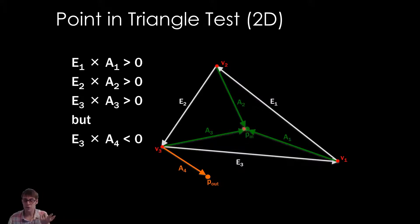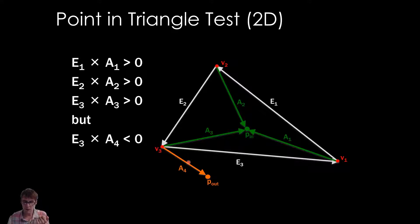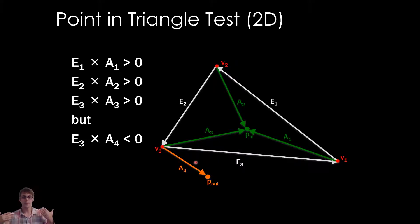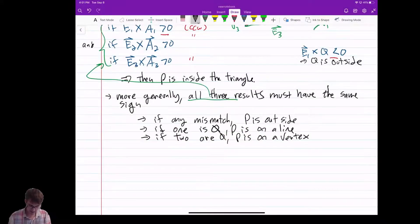Here's a slide showing the same demonstration: E1 counterclockwise to A1, E2 counterclockwise to A2, E3 counterclockwise to A3 — so P is inside. For P outside: the vector from V2 to P out would be counterclockwise, but E3 is clockwise — so it's a mismatch, therefore it's outside the triangle. You can now determine whether a point is inside a triangle or not.